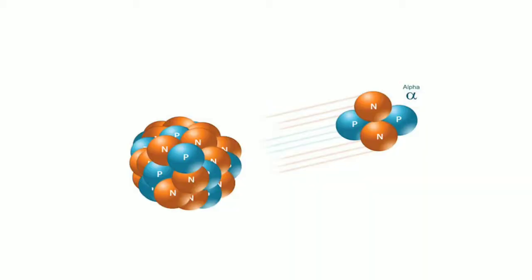Alpha particles lack the energy to penetrate even the outer layer of skin, so exposure to the outside of the body is not a major concern. Inside the body, however, they can be very harmful. If alpha emitters are inhaled, swallowed, or get into the body through a cut, the alpha particles can damage sensitive living tissue. The way these large, heavy particles cause damage makes them more dangerous than other types of radiation. The ionizations they cause are very close together — they can release all their energy in a few cells — resulting in more severe damage to cells and DNA.